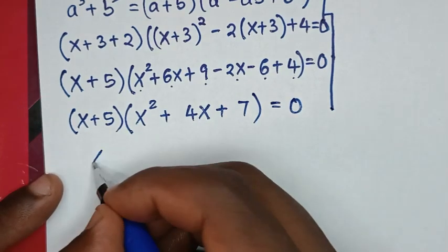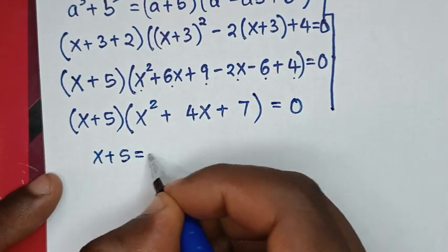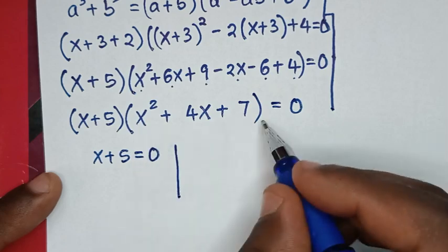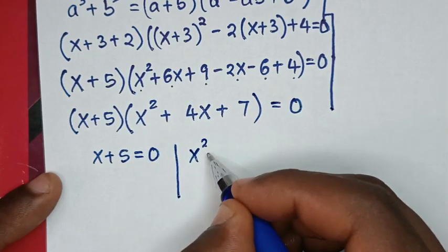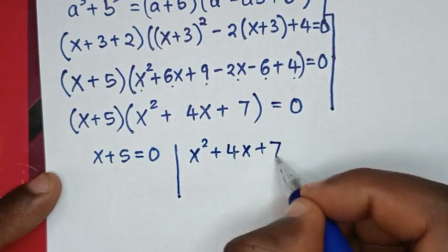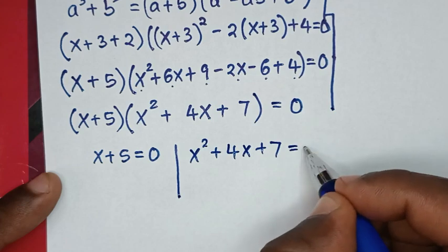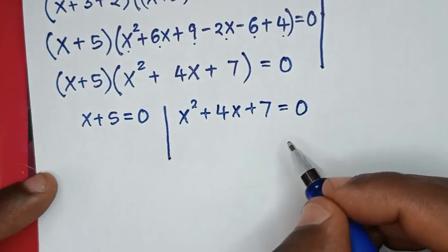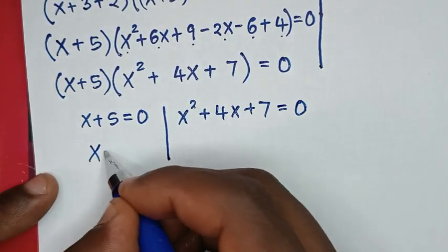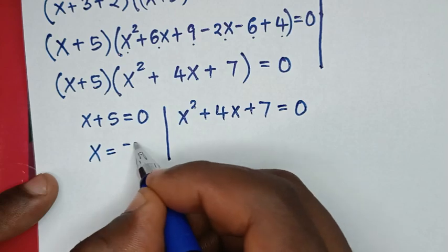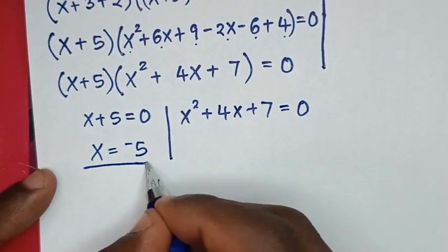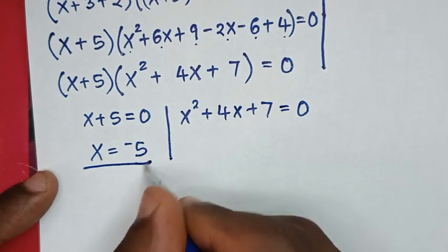From here we have two solutions. The first solution is x + 5 = 0, so taking 5 to the other side gives x = -5. This is the first real solution for the value of x.